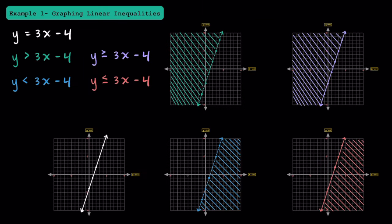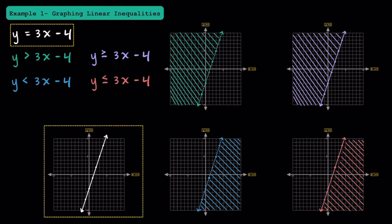In example one, let's talk about how to graph linear inequalities. To understand how to graph linear inequalities, it's important to first understand how to graph linear equations. Let's look at this equation of y is equal to 3x minus 4. Here's the graph for this equation. The minus 4 in the equation represents the y-intercept, which is right down here at (0, negative 4). The slope is positive 3, or a ratio of 3 to 1, which we see as a rise of 3 and a run of 1. Since the linear equation is already in slope-intercept form, it's easy to graph.